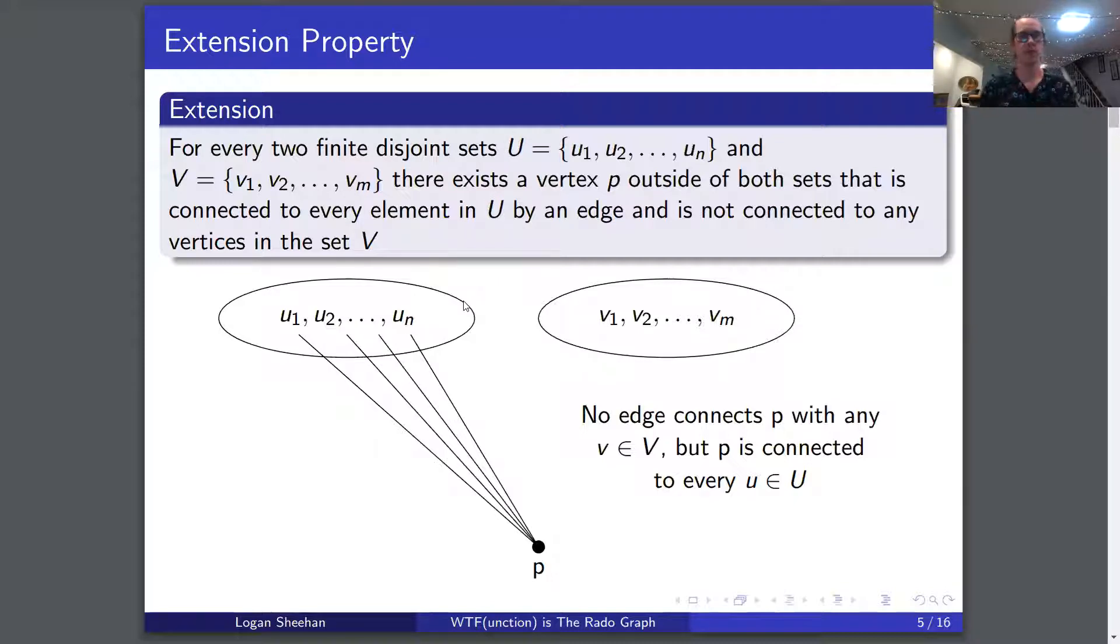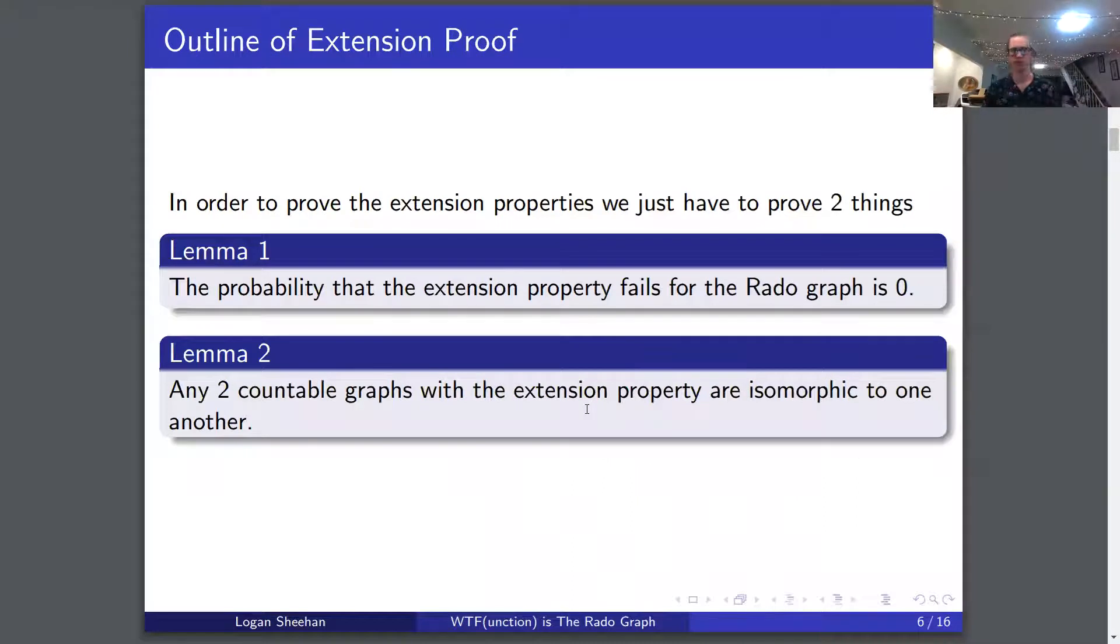The Rado graph has some really cool properties that always hold. First, the extension property: for every two finite disjoint sets U and V, there exists a vertex p outside of both sets that is connected to every element in U by an edge and is not connected to any vertices in the set V. We can see this by our picture - p is clearly connected to every element in U but not part of the set U, and clearly not connected to anything in V. To prove this, we need to show the probability the extension property fails for the Rado graph is zero, and that any two countable graphs with the extension property are isomorphic to one another.